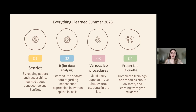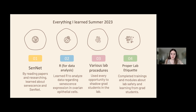To provide a quick timeline for my summer: I first started by reading scientific papers and journals, researching and learning about senescence in the SenNet Consortium. I then started learning the coding language R through online tutorials. R is used for data analysis and helped me to generate UMAPs, feature plots, and violin plots regarding senescence expression in ovarian epithelial cells. I also spent my time shadowing grad students in the lab during various procedures and asking questions about how each procedure was connected to senescence.